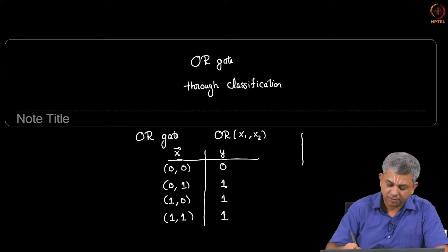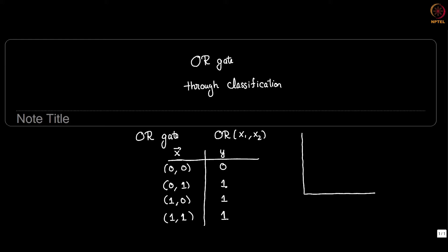Suppose we represent this as a figure. Let us take X1 here, X2 on this axis. So (0,0) gives us 0 and the others give us 1. So let X represent 0 and let the circle represent 1.